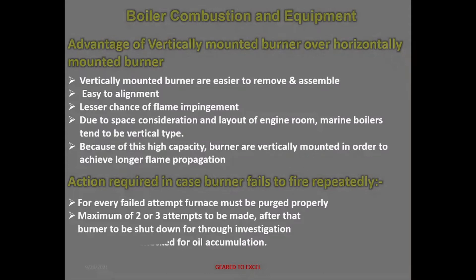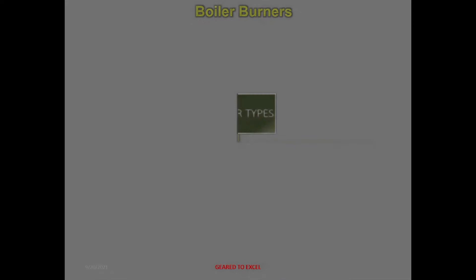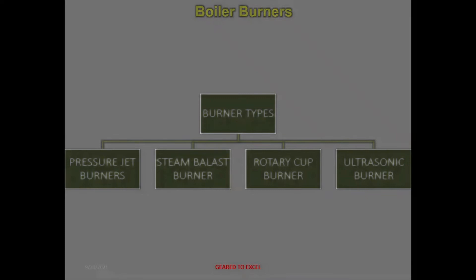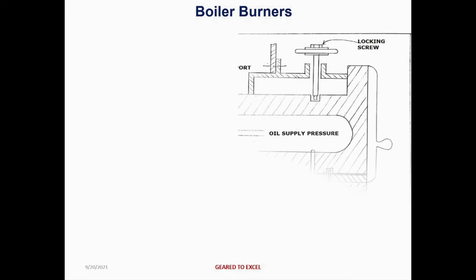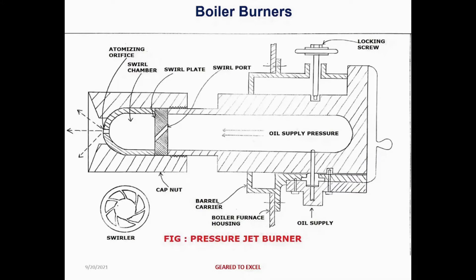Burner types: pressure jet burner, steam blast burner, rotary cup burner, and ultrasonic burner. The cross-sectional drawing for the pressure jet burner shows the atomizing orifice, swirl chamber, swirl plate, swirl port, locking screw, oil supply port, boiler furnace housing, barrel carrier, and cap nut. The swirler component is also shown in an exploded cross-sectional view.